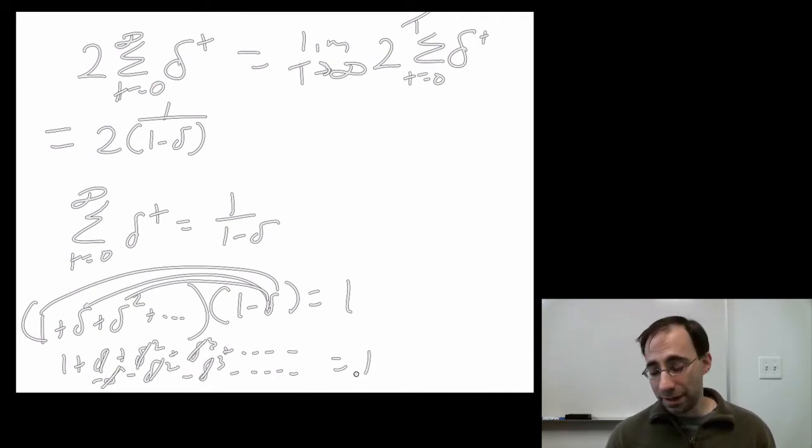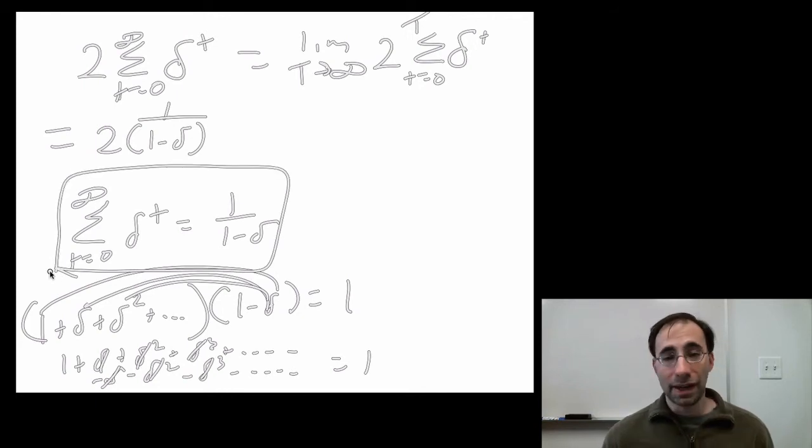This is only true for an infinite series, mind you, because there's no ending to this to worry about. So, if this is true, this is a useful identity, by the way, in game theory when you do repeated games. Then we've calculated an infinite series.